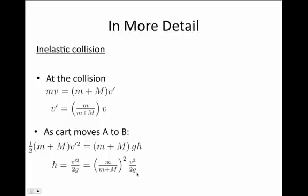The ratio of v squared over 2g is much like what we saw in earlier kinematics problems for how high a projectile will go, except that it's now being modified by this ratio of the masses squared, which is always a number less than one.